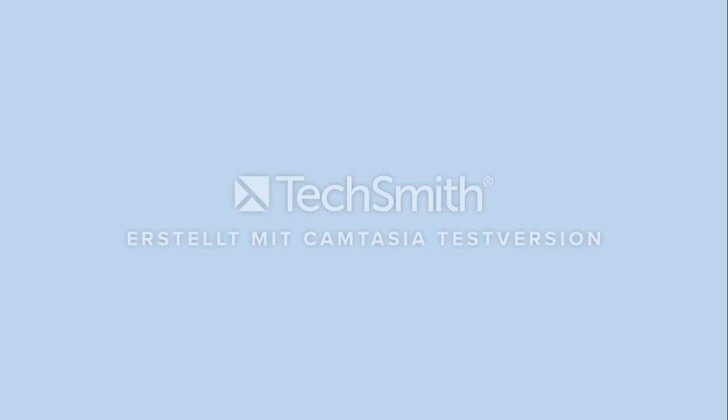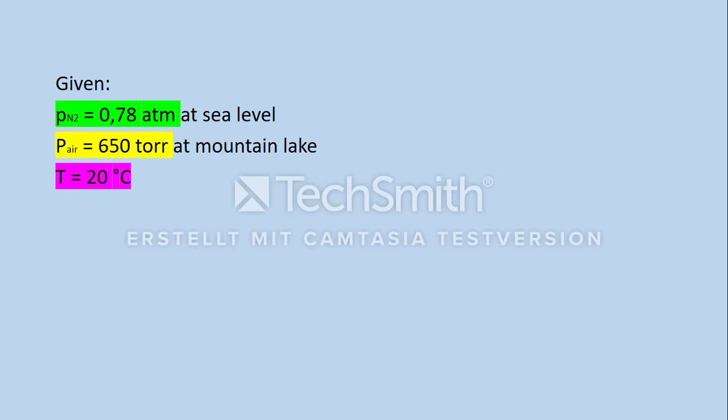First of all, we list what is given. There is the partial pressure of nitrogen at sea level at 0.78 atm and the total pressure of the air at the surface water of the mountain lake at 650 torr. The temperature is 20 degrees Celsius. As well we know, the total pressure of air at sea level is 1 atm.